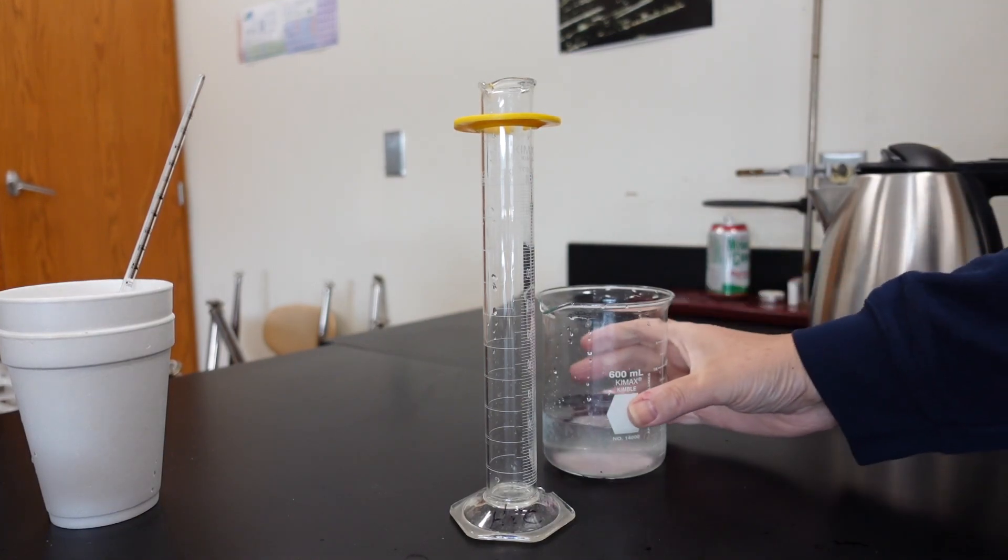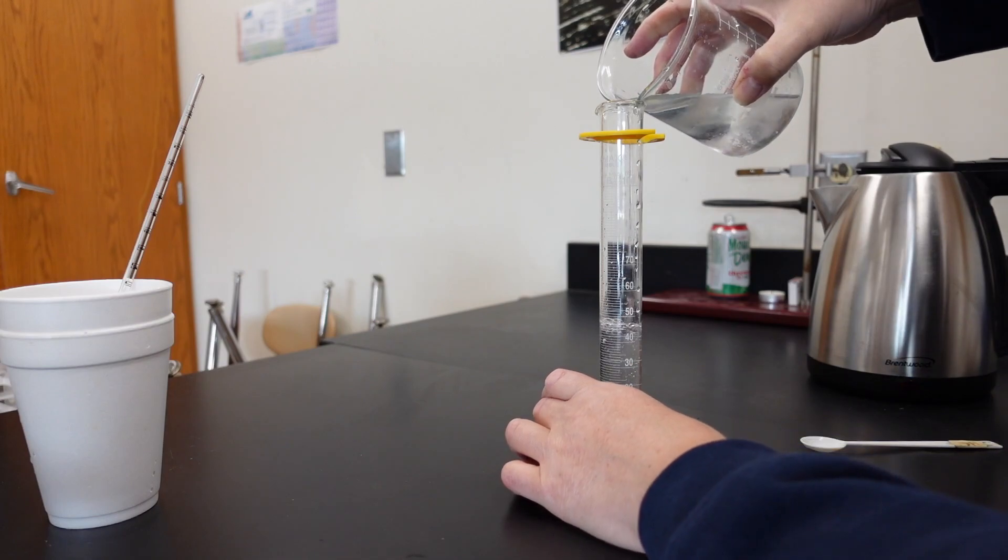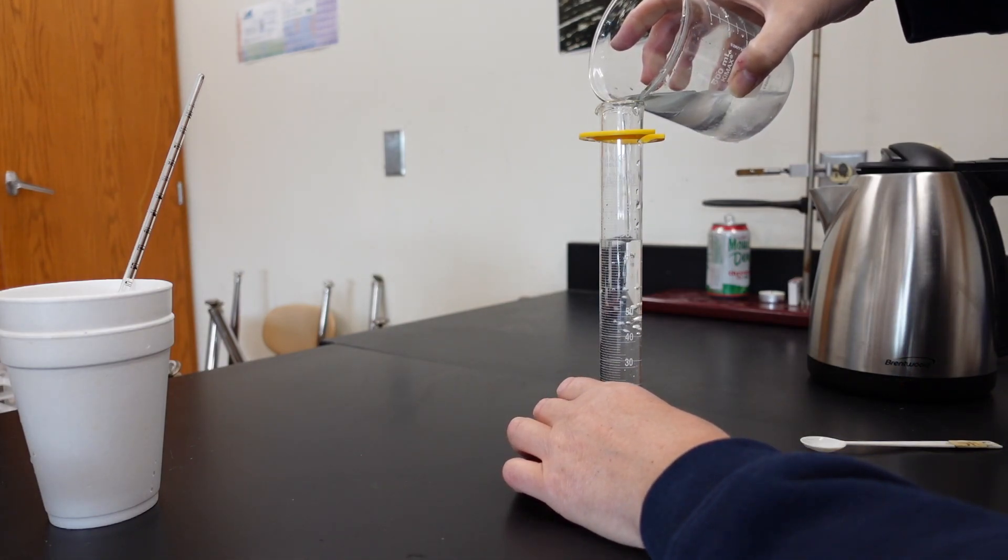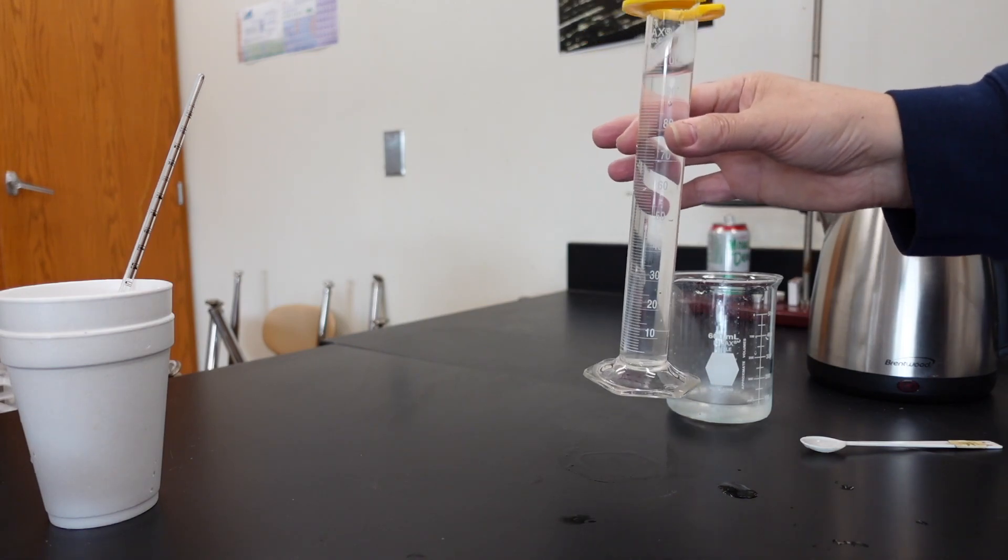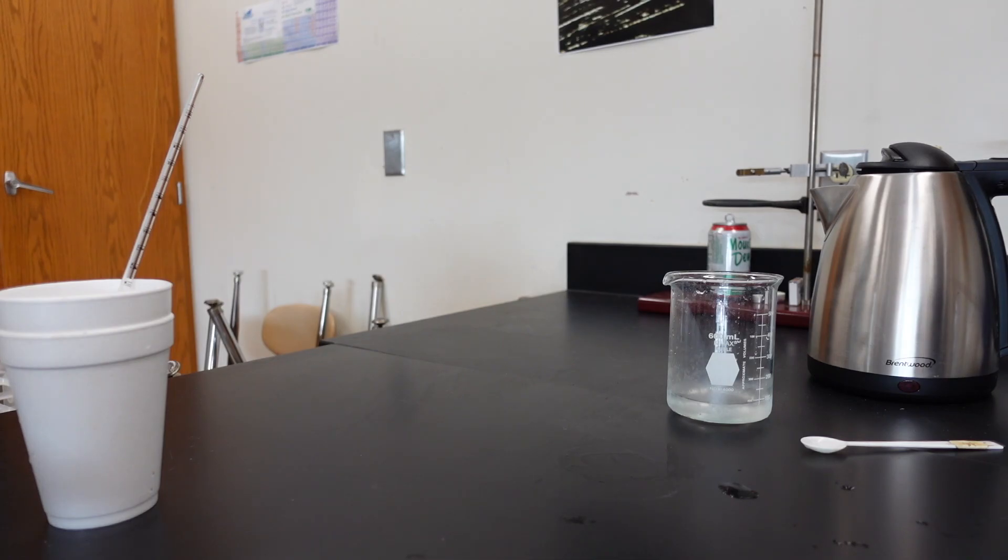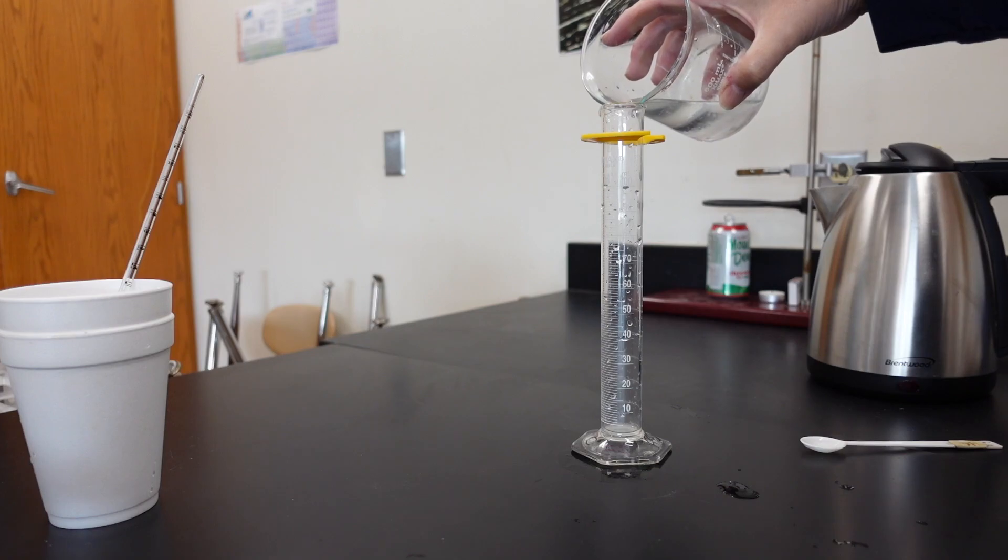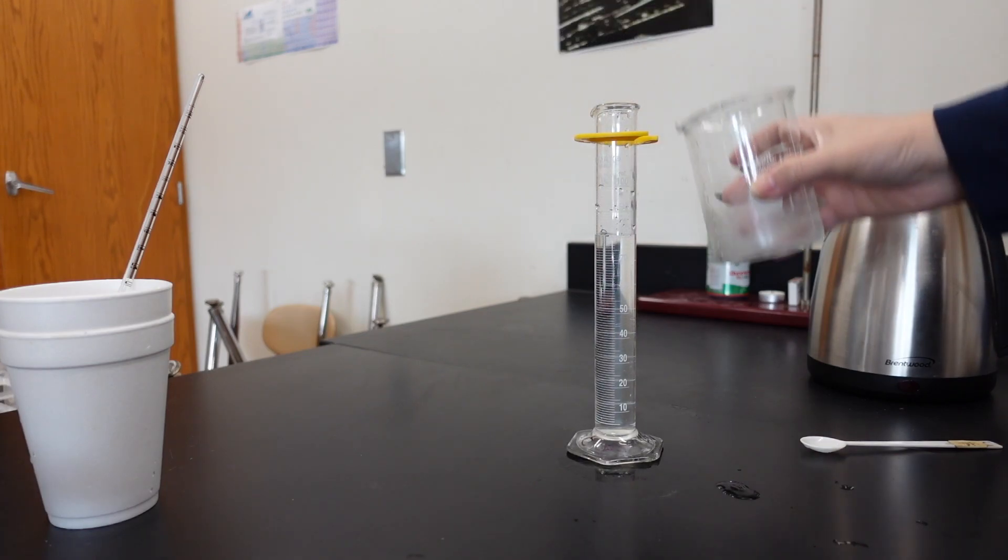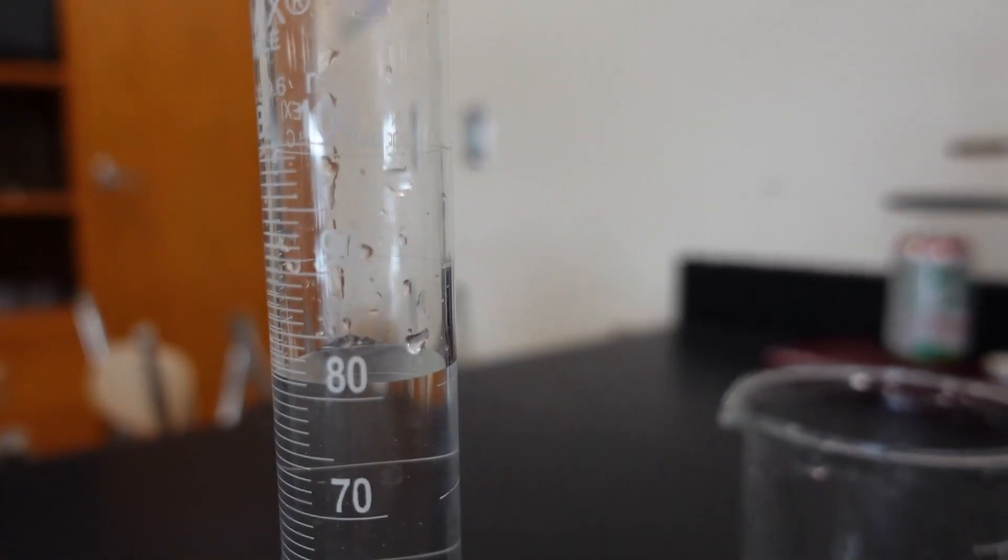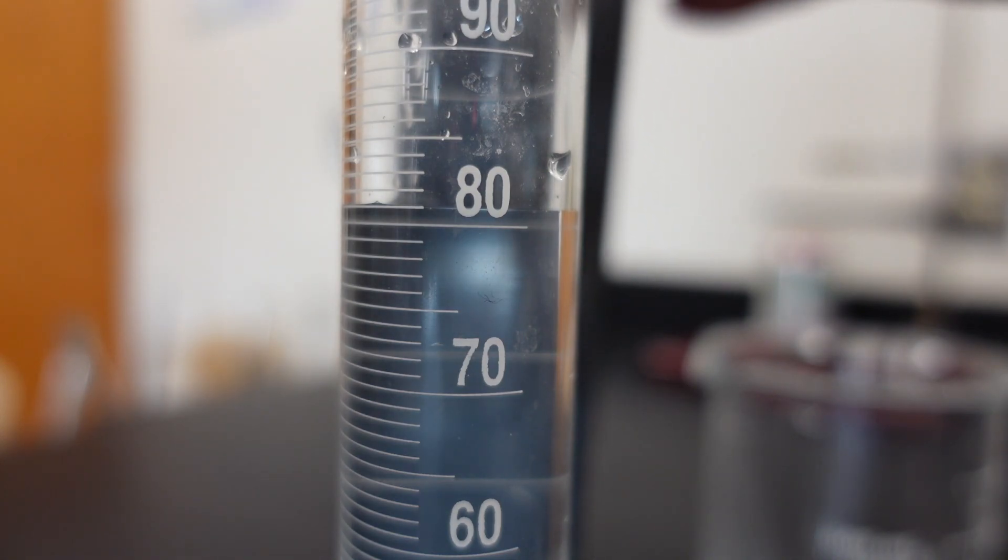So this hundred milliliters is the water we originally put in the calorimeter, and I'm going to dump it out. Whatever remains in that beaker represents the volume of ice that melted. All right, now go ahead and record that volume, the volume of ice that melted.